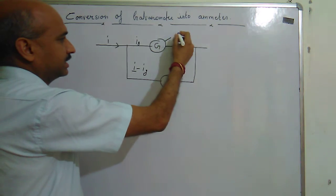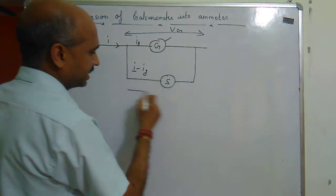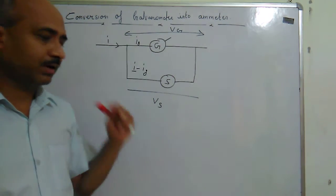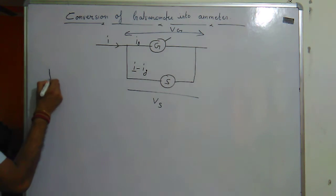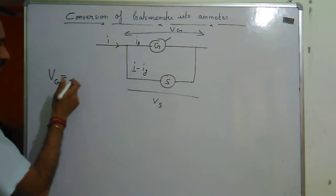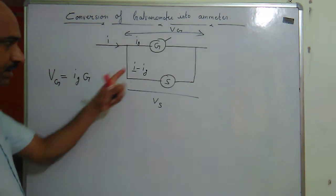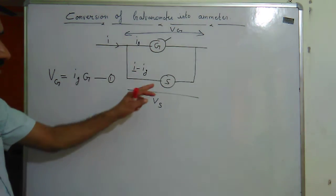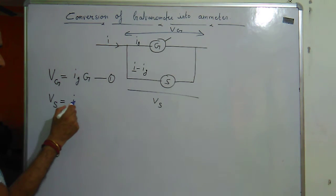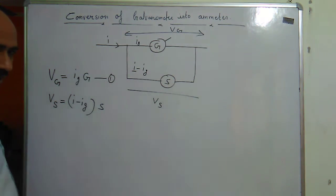Both the galvanometer and the shunt S are connected in parallel, so the voltage across both is equal. Suppose Vg is the voltage across the galvanometer and Vs is the voltage across the shunt S. We know that parallel voltages are equal. So, Vg = Ig × G — this is our first equation. And Vs = (I − Ig) × S — this is our second equation.